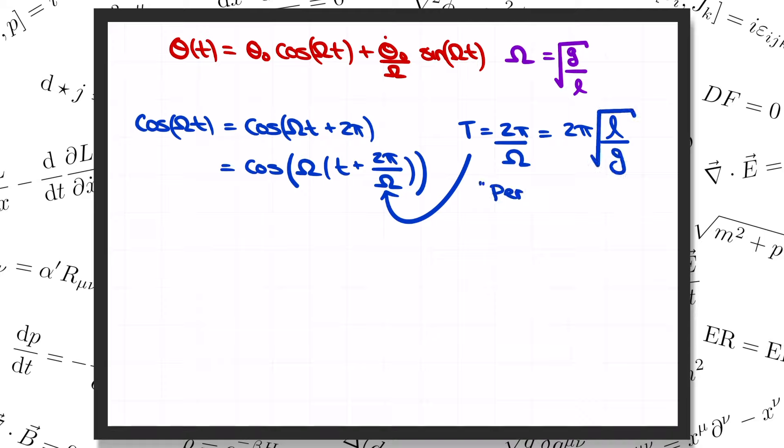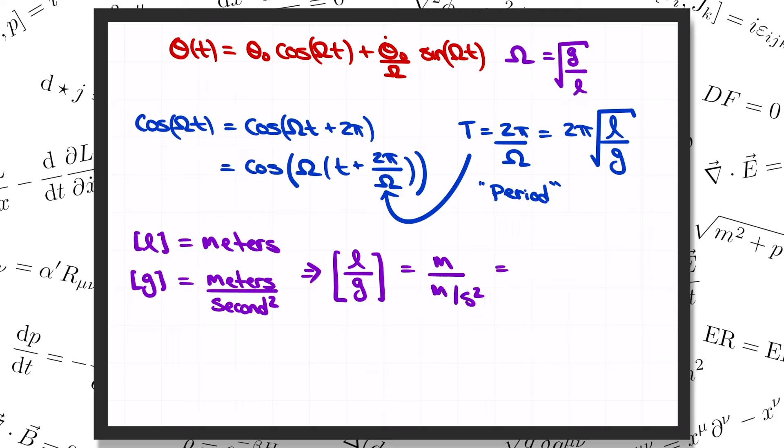We actually could have mostly guessed this at the start just by thinking about units. The only way to get something with units of seconds out of l, g, and m is the combination square root of l over g. l has units of meters, g has units of meters per second squared, and so when I divide them, I get seconds squared. Then if I take the square root, I get seconds, which is of course what we wanted for the period. The answer can't depend on the mass of the particle because there's no other parameter to cancel out that factor of kilograms in the answer. That doesn't tell us anything about additional unitless factors, like this factor of 2pi that actually does show up in the answer. But the point is that thinking about units in physics often gets us 90% of the way toward our answer with very little effort.